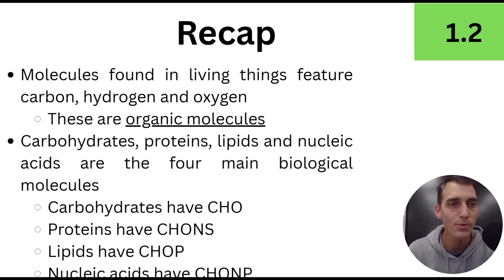Okay, so here's the recap. Once again, I'm just going to read through this to make sure we got covered all the points. Molecules found in living things feature carbon, hydrogen, and oxygen. Those are what are called organic molecules. And those are, once again, any type of molecule that comes from a living thing and features carbon atoms bound to other carbon atoms. Carbohydrates, proteins, lipids, and nucleic acids are the four main biological molecules that we're going to be studying for the rest of this unit. Carbohydrates feature carbon, hydrogen, oxygen. Proteins have carbon, hydrogen, oxygen, nitrogen, sulfur. Lipids have carbon, hydrogen, oxygen, and phosphorus. And nucleic acids have carbon, hydrogen, oxygen, nitrogen, and phosphorus.